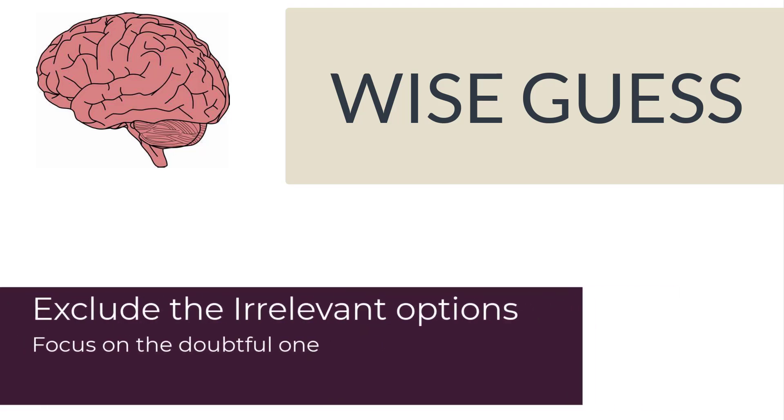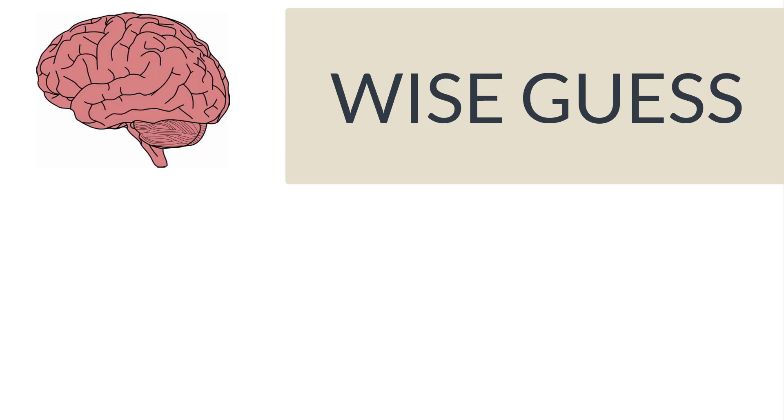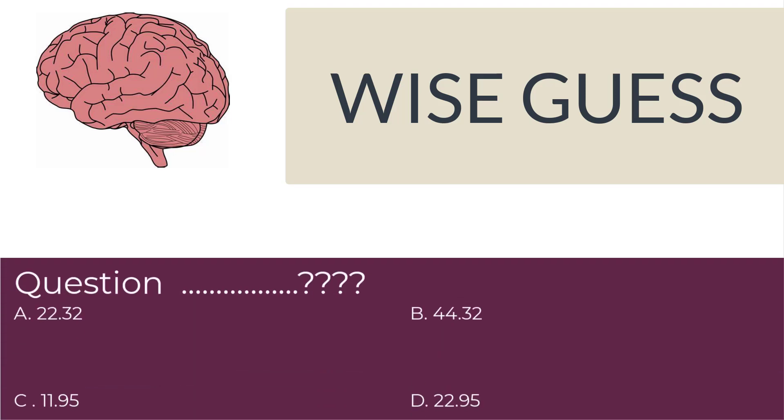The first step will be to exclude the irrelevant options so you have a less crowded room for answers, and it will funnel down the probability of your right answering. Now you might have seen some questions having this type of answers, and this is a really common encounter. So basically, when you know nothing and are running out of time, you can use a trick: use the common and the most repeated part among the options. For example, here 22 is common between A and D, and 32 is common between A and B.